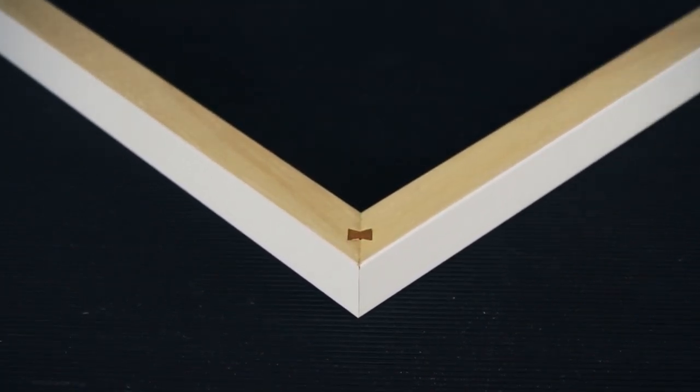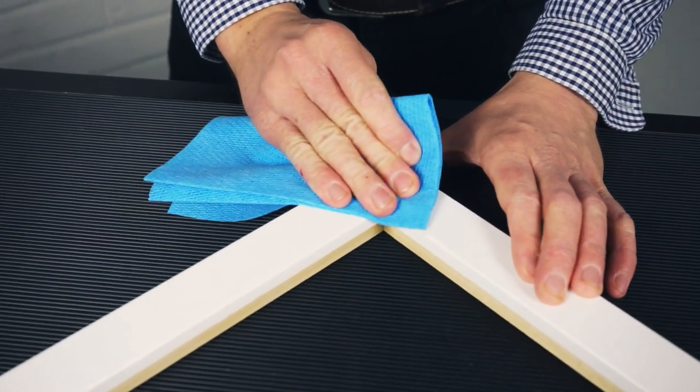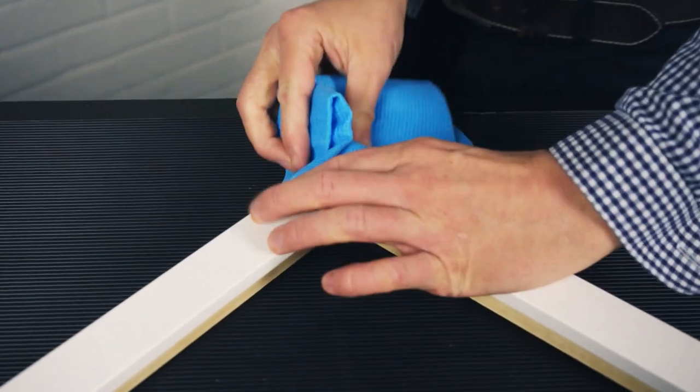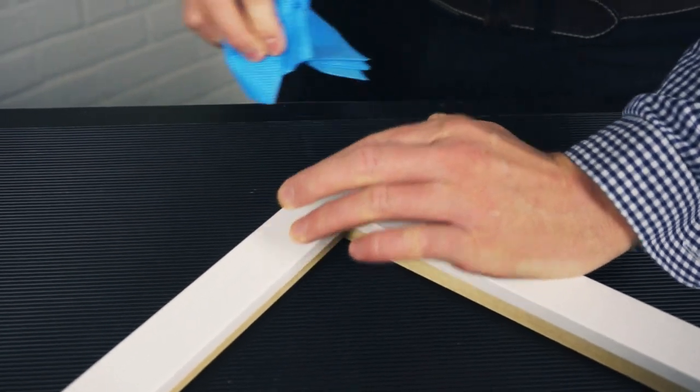Step three, turn over the corner and with the cloth clear away any excess glue or dust. Now you just need to repeat that with the other two lengths.